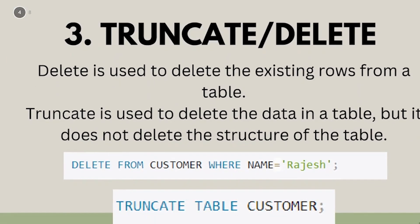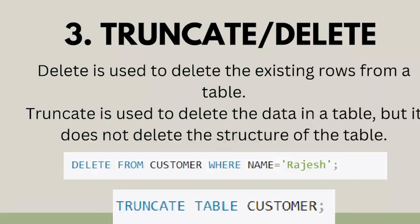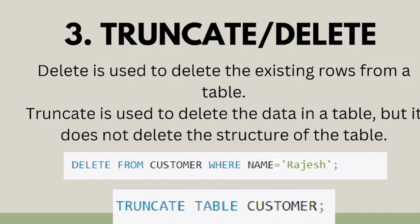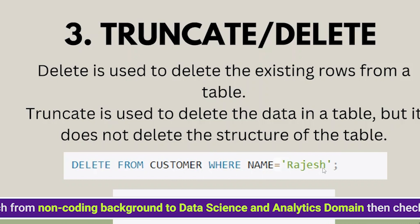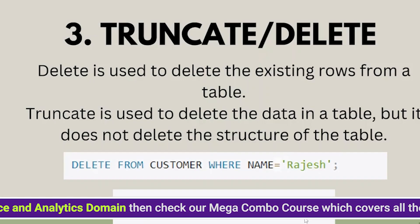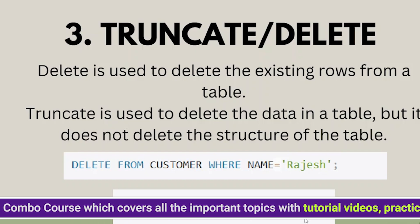The third most asked keywords are TRUNCATE and DELETE, and the difference between the two is commonly asked. DELETE is used to delete existing rows from a table and works with the WHERE clause — it can delete a single or multiple records conditionally. TRUNCATE is used to completely empty a table, deleting all records, but the structure of the table remains intact. For example, DELETE FROM customer WHERE name = 'Rajesh' deletes only matching records, while TRUNCATE TABLE customer removes all records.